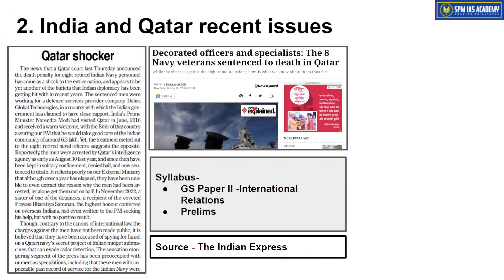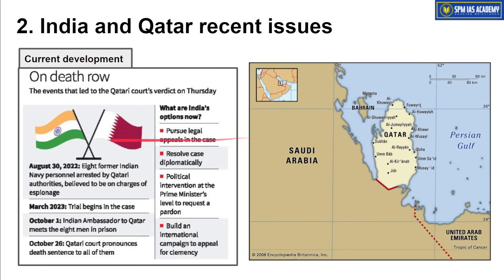The next article is about India and Qatar recent developments, important from GS paper 2 international relations point of view. Qatar is a small country territory-wise, located in the Persian Gulf, but very important in terms of energy security. What happened: some Indian Navy retired personnel were arrested in Qatar. Eight former Indian Navy personnel were arrested by Qatari authorities on charges of espionage — accused of spying. A trial began, and recently on 26 September, the Qatari court sentenced all eight retired Navy persons to death.